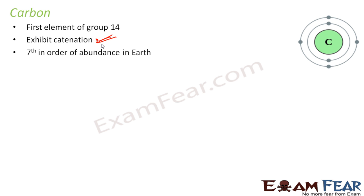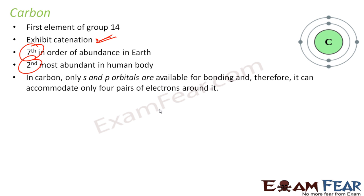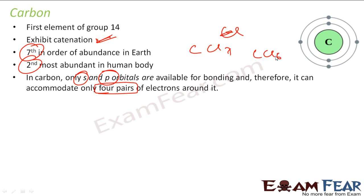It is the seventh most abundant element on the earth and the second most abundant in the human body. In carbon, only S and P orbitals are available, so it accommodates only 4 pairs of electrons. You will never find carbon with 7 or 6 chlorines — only a maximum of 4, because it has only 4 pairs of S and P orbitals.